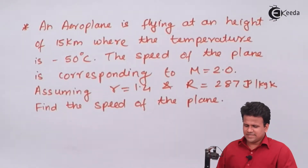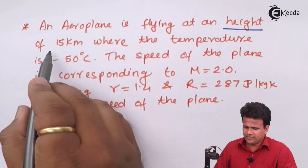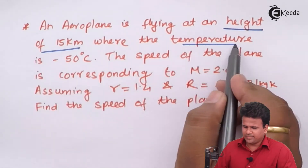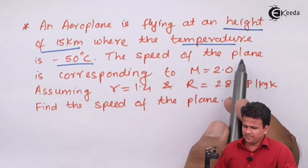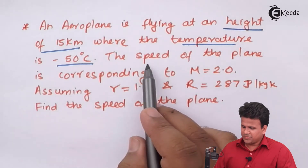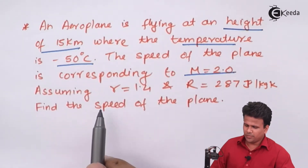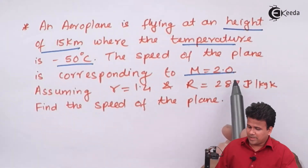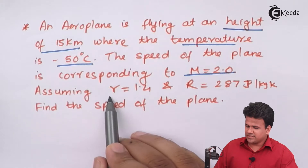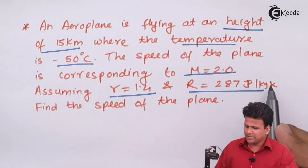We have a problem here which states that an aeroplane is flying at a height of 15 kilometers, where the temperature is minus 50 degrees Celsius. We have to find the speed of the plane corresponding to Mach number 2.0, assuming gamma equals 1.4 and R equals 287, that is 0.287 kilojoule per kg Kelvin.